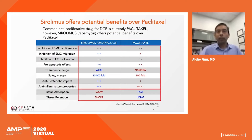The potential benefits of sirolimus over paclitaxel: both inhibit smooth muscle cell proliferation and migration — perhaps sirolimus is better for migration. Both inhibit endothelial cell proliferation. The therapeutic range of sirolimus is considered wide, whereas for paclitaxel it is narrow. The safety margin is much wider for sirolimus. The problem with using sirolimus is that its tissue absorption is slow and tissue retention is short, whereas paclitaxel has quick absorption and long retention, one reason it was chosen for earlier drug-coated balloons.